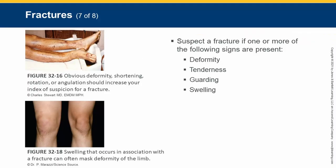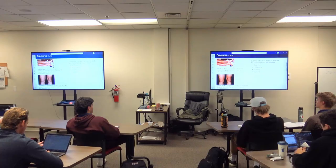Ways to suspect a fracture: look at it. If you've been a person, you should look at a deformed limb and know something is wrong. Deformity is a big indicator.